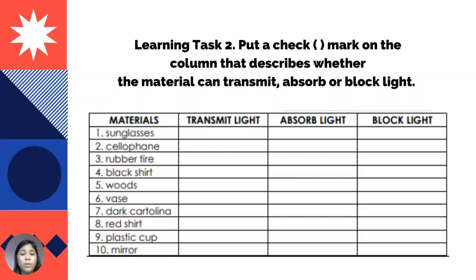For Learning Task 2, put a check mark in the column that describes whether the material can transmit, absorb, or block light. Number one: sunglasses. Two: cellophane. Three: rubber tire. Four: black shirt. Five: wood. Six: braids. Seven: dark cartolina. Eight: red shirt. Nine: plastic cup. Ten: mirror.